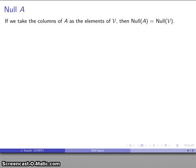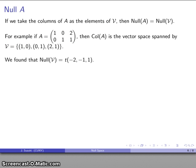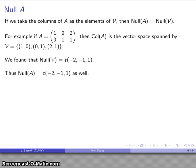Now let's take a slight change in viewpoint. If I take the columns of a matrix A as the vectors in our set, then null(A) — the null space of the matrix A — is the same as the null space of that set of vectors V. So if we take our vectors [1, 0], [0, 1], [2, 1] as column vectors forming matrix A, then the column space of A is the vector space spanned by those columns, and the null space of those vectors, spanned by t·(−2, −1, 1), is the same as the null space of A. The null space of A means the null space of the vector space spanned by the columns of A treated as vectors.